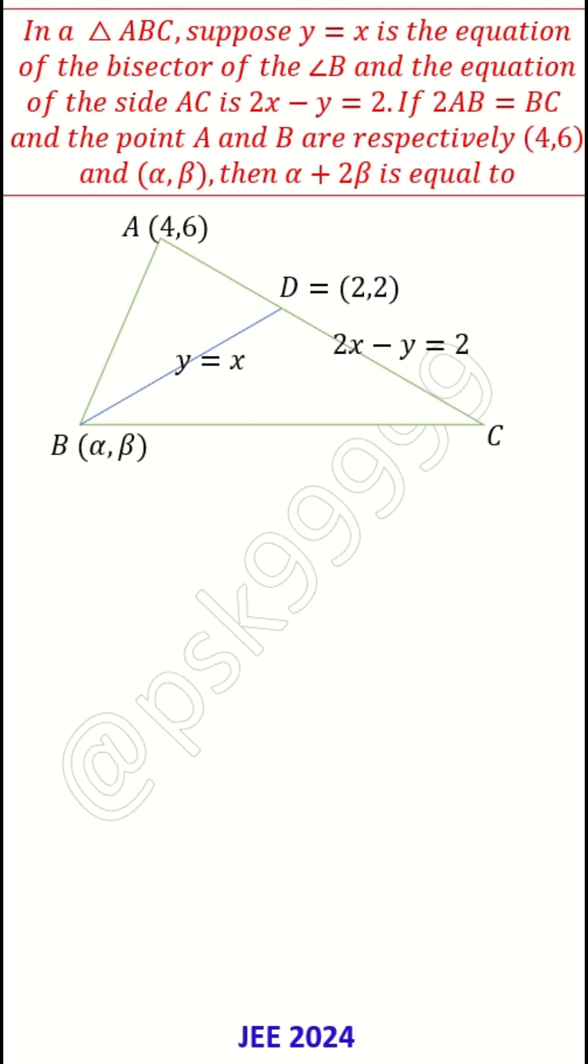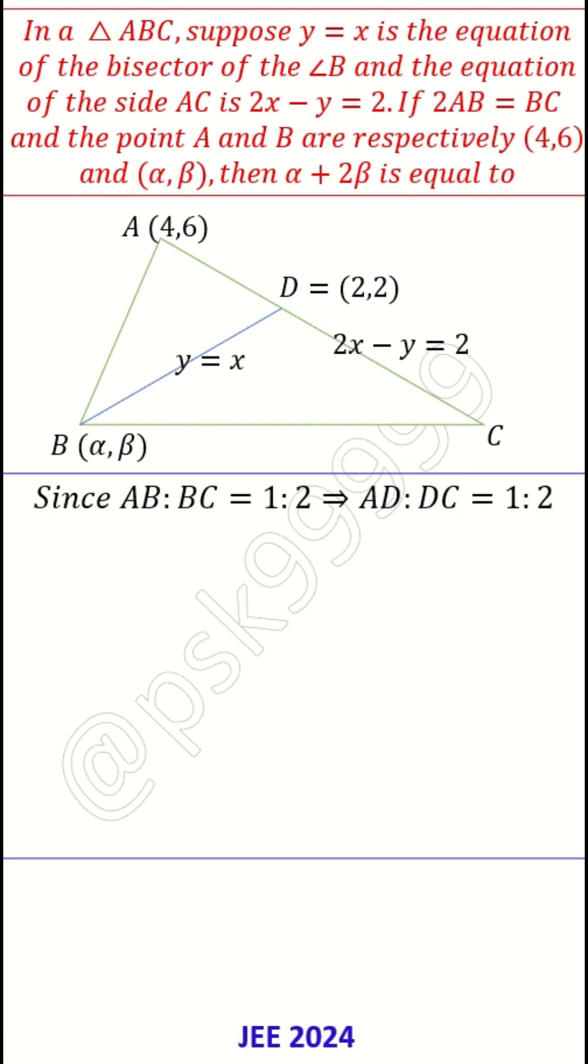Next, AD:DC - what is the ratio? That is nothing but AB:BC, because BD is the angular bisector. This angular bisector bisects AC in the ratio AB:BC. AB:BC is how much? 1:2. Similarly, AD:DC is also 1:2.